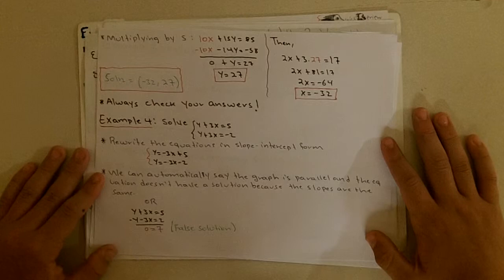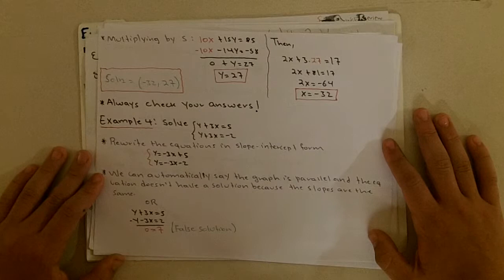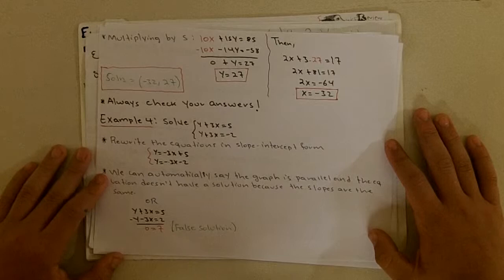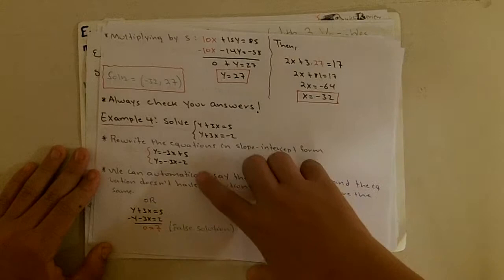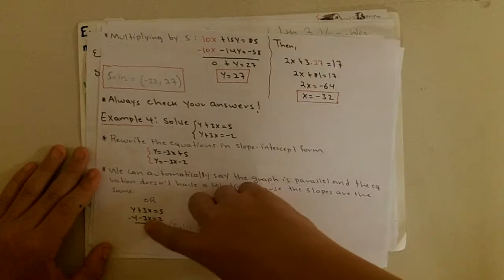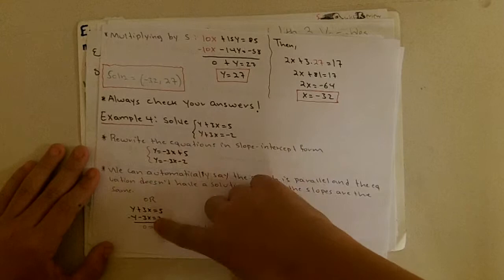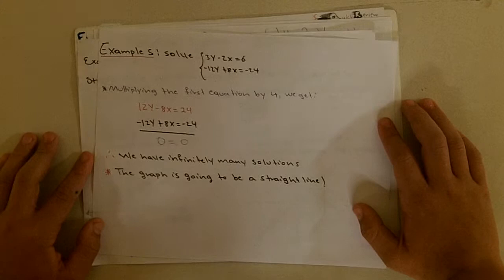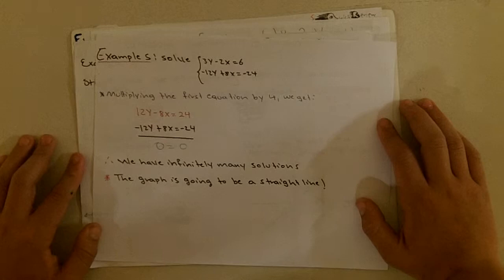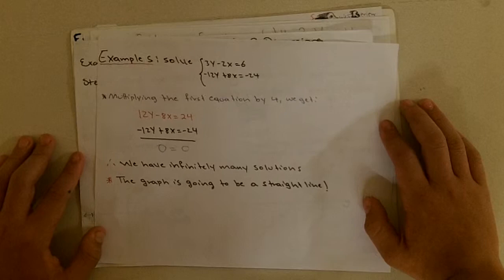Example 4: solving y plus 3x equals 5 and y plus 3x equals negative 2. Rewriting in slope-intercept form gives y equals negative 3x plus 5 and y equals negative 3x minus 2 — parallel lines with the same slope but different y-intercepts. Multiplying the first equation by negative 1 and adding gives 0 equals 7, a false solution, meaning no solutions. Example 5: solving 3y minus 2x equals 6 and negative 12y plus 8x equals negative 24. Multiplying the first by 4 gives 12y minus 8x equals 24, and adding gives 0 equals 0, meaning infinitely many solutions — one straight line.